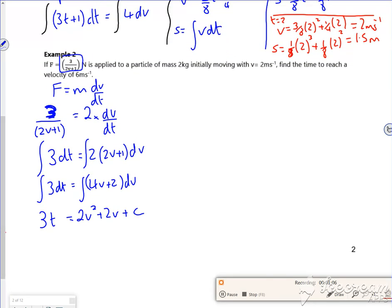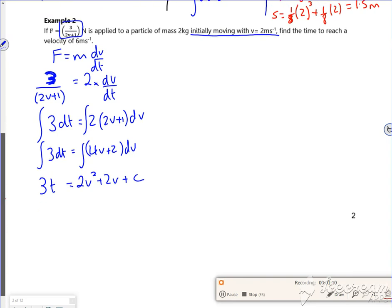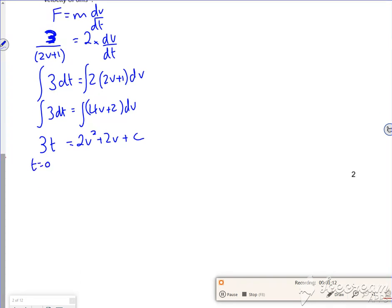So it tells us, initially moving with a velocity of 2. So t equals 0, v equals 2. So 0 is 2 lots of 2 squared plus 2 lots of 2 plus c. So that's going to be 12 on the right, take it over, I've got minus 12 plus c.